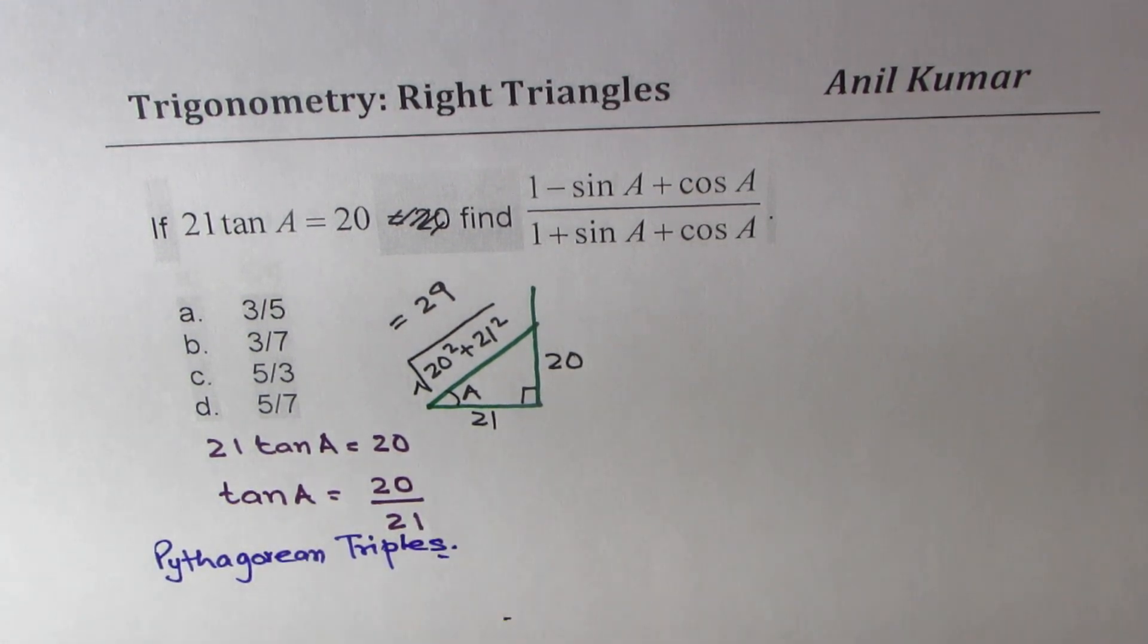Otherwise, it takes a bit of time. So Pythagorean triples are like 3, 4, and 5. And there are many. So this is one of those common ones which you should know.